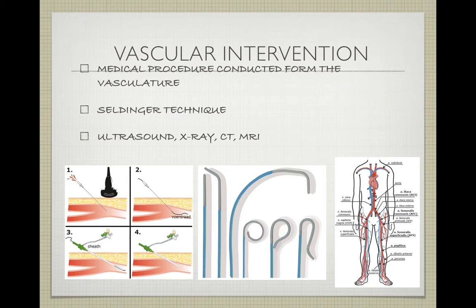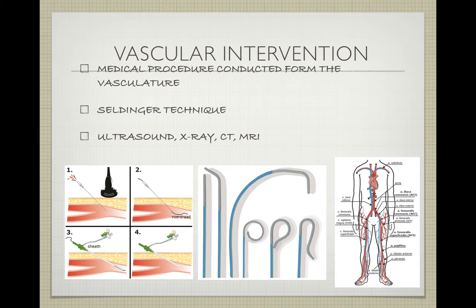It all starts with the Seldinger technique, which is the basic first step of the vascular intervention, as you can see in the pictures. First, you locate the vessel with ultrasound — most commonly the common femoral artery or the brachial artery is punctured. Then you place your guidewire, as shown in the second picture, and afterwards you put in the sheath, which is your workstation, and you can advance your catheter within the sheath. There are lots of different catheters and guidewires with different properties — they can be flexible or stiff and are needed for different situations.